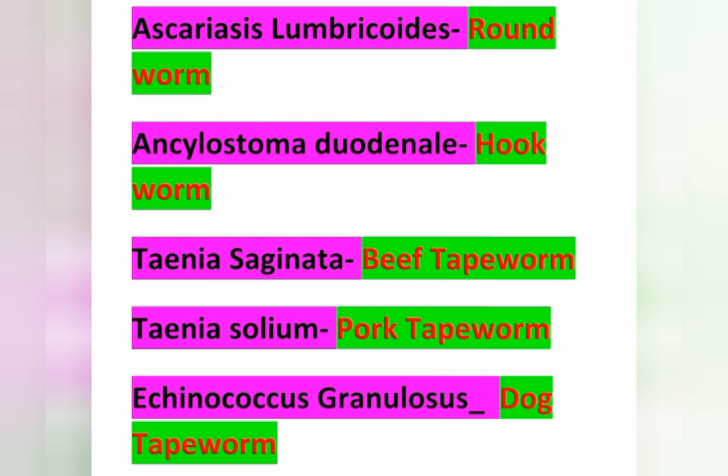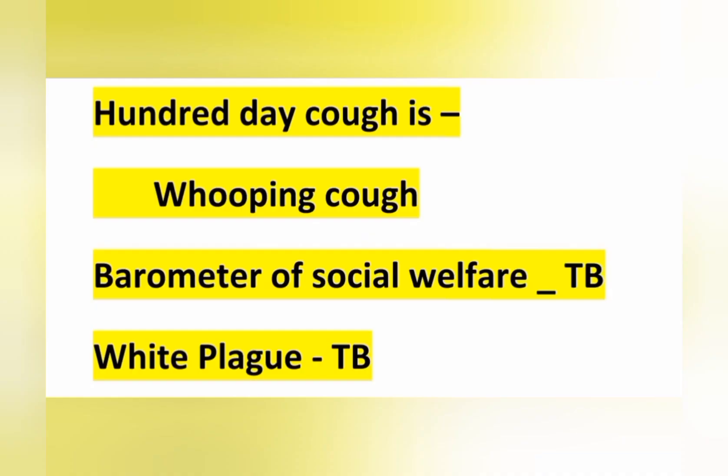Ascaris lumbricoides is known as roundworm. Ancylostoma duodenale is known as hookworm. Taenia saginata is known as beef tapeworm, and Taenia solium is known as pork tapeworm. Echinococcus granulosus is also known as dog tapeworm.